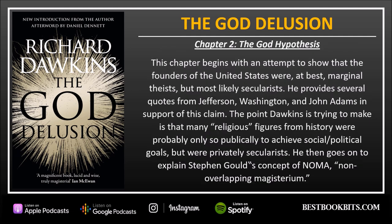Chapter 2: The God Hypothesis. This chapter begins with an attempt to show that the founders of the United States were at best marginal theists but most likely secularists. Dawkins provides several quotes from Jefferson, Washington, and John Adams in support of this claim. His point is that many religious figures from history were probably only publicly religious to achieve social and political goals but were privately secularist.